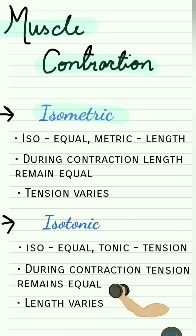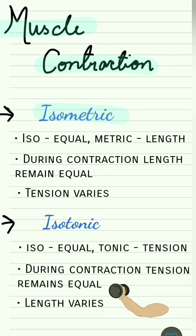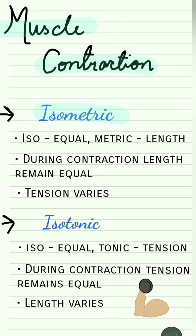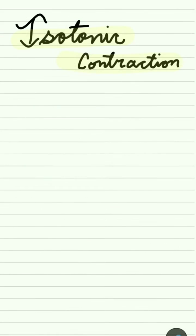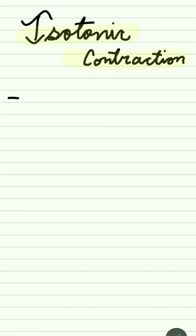Because the weight of the dumbbell being lifted is the same, but during the movement the length of the muscle of the arm changes. At this point we will introduce two new terms which are subdivisions of isotonic contraction: concentric contraction and eccentric contraction.